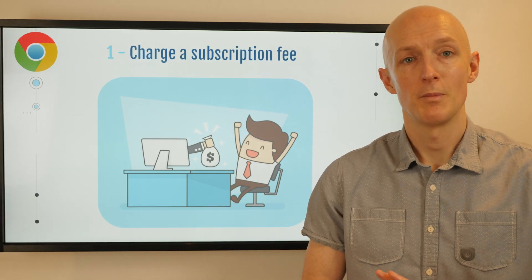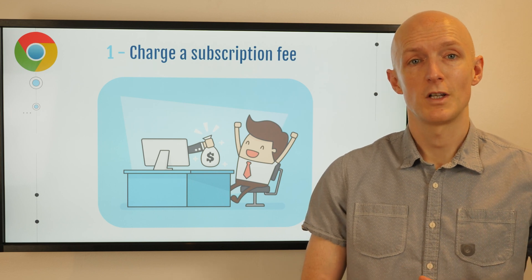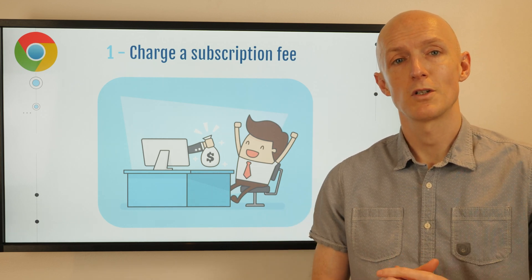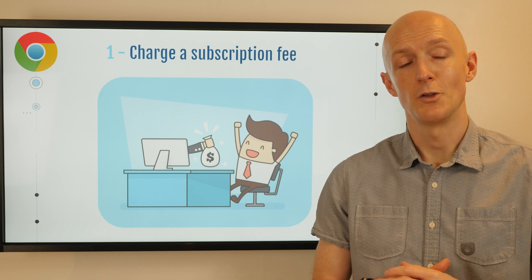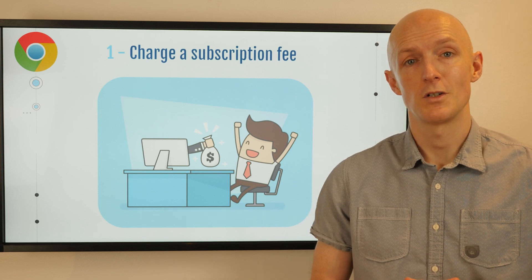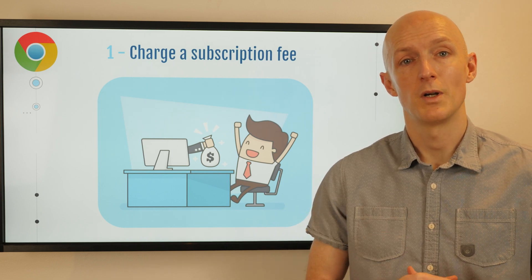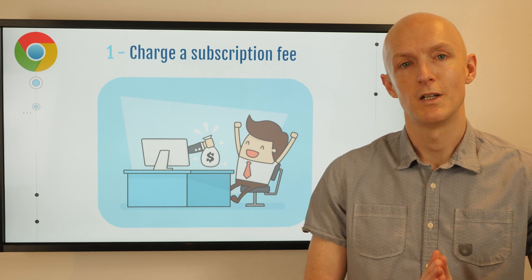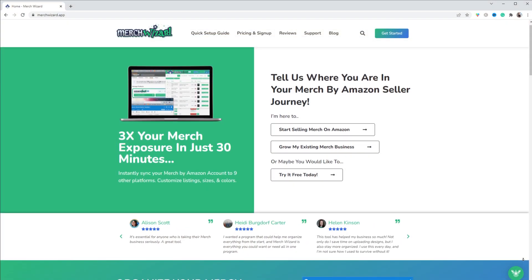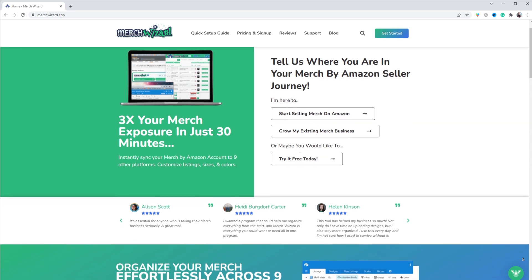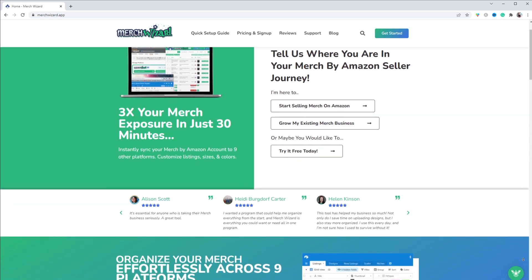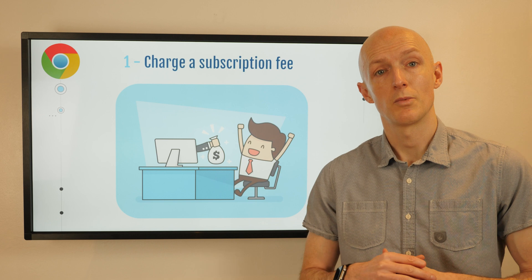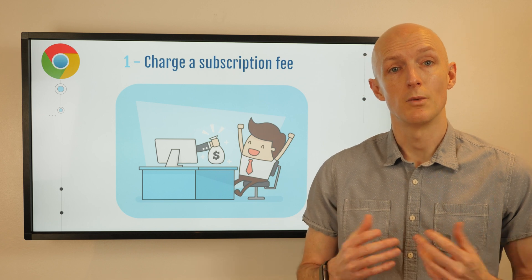To get people through the door you can offer a free version of your extension with limited features or usage restrictions, and once they realize how useful it is they'll likely upgrade to a paid plan to unlock all the features they need. On my own Chrome extensions I had a free forever tier with limited features, and through customer onboarding emails I was able to get them to upgrade to the premium tier, and it worked really well.